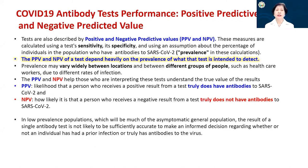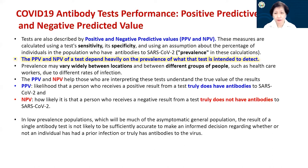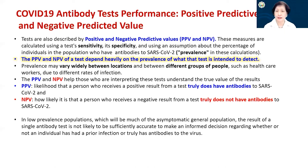In addition to sensitivity and specificity, we know about positive predictive value and negative predictive value. These measures — PPV and NPV — are calculated using test sensitivity, specificity, and an assumption about the percentage of individuals in the population who have antibodies to SARS-CoV-2, so we have to consider prevalence in these calculations. Different population groups in different situations will have different prevalence of antibodies to SARS-CoV-2 — for example, healthcare workers versus rural populations.